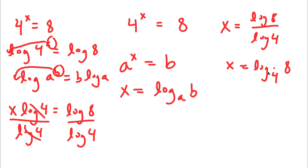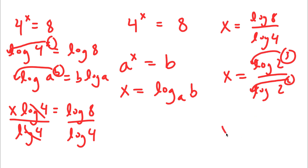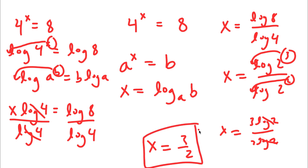Now that I have log base 4 of 8, I'm going to use the form log 8 over log 4. Log 8 is simply log of 2 to the power of 3, and log 4 is log of 2 to the power of 2. If I move 3 to the front and 2 to the front, I get 3 log 2 over 2 log 2. The log 2's cancel out, and I'm left with x is equal to 3 over 2. So that's the second method.